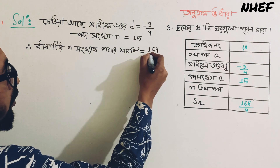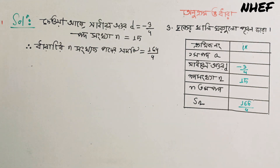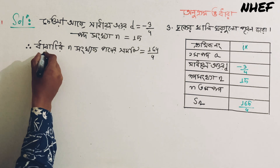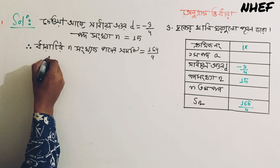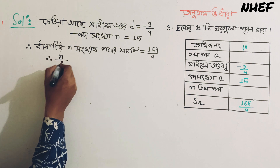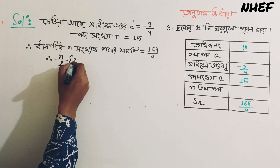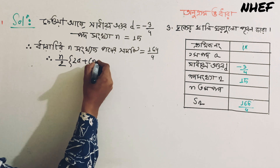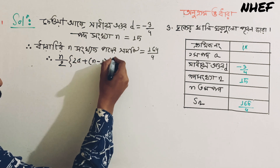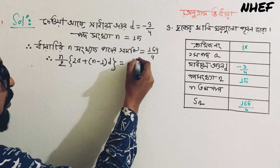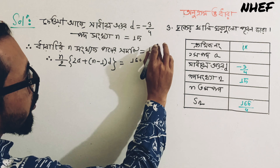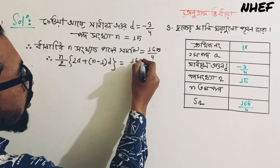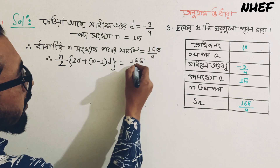The sum is equal to 165 divided by 4. The sum of n terms is 165 divided by 4.